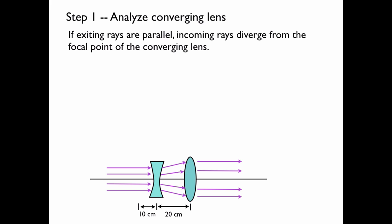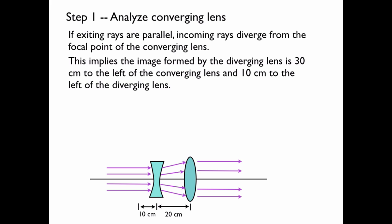However there's no object there, there's just the image that's created by the diverging lens. This implies that the image formed by the diverging lens is 30 centimeters to the left of the converging lens at its focal point, and this is 10 centimeters to the left of the diverging lens.